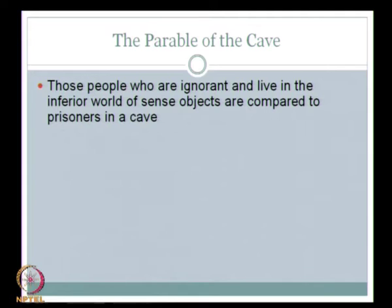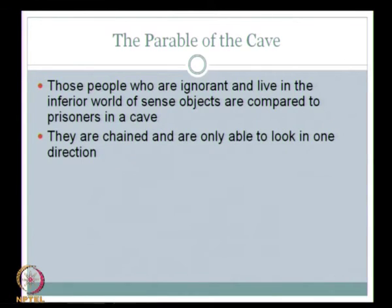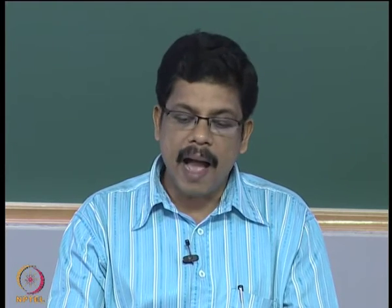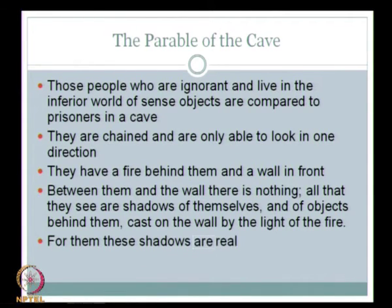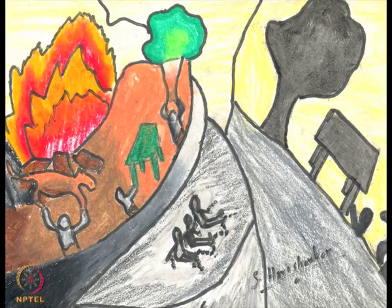Plato ultimately tells us that most of us, who live in this world and consider it real — who treat the objects in this world as ultimate realities — are actually having a very inferior kind of existence. We are ignorant and live in the inferior world of sense objects, chained and only able to look in one direction, not able to see what exactly reality is. The sense organs always drag us to the world of particularities — particular objects in this world.